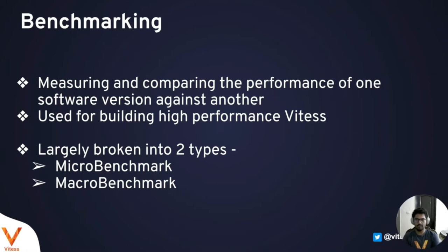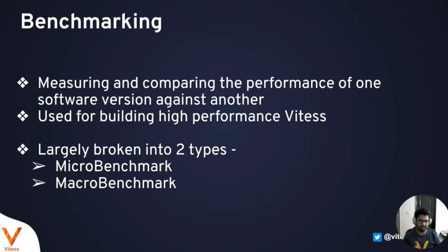First things first, what is benchmarking? Benchmarking is a way to measure and compare the performance of one software version against another. When building Vitesse, we have the main branch, different releases like release 12 and release 11, patch releases, and PRs changing parts of the code base. We want to measure the performance of each and compare which is better, enabling developers to know whether a code change is improving performance. Benchmarks can be broken into two parts: micro benchmarks and macro benchmarks.